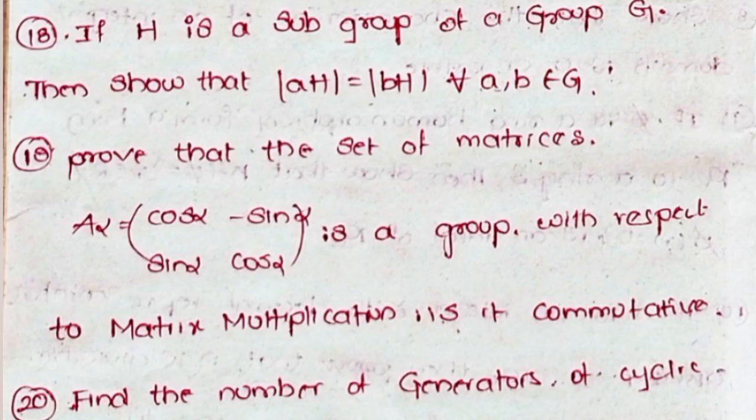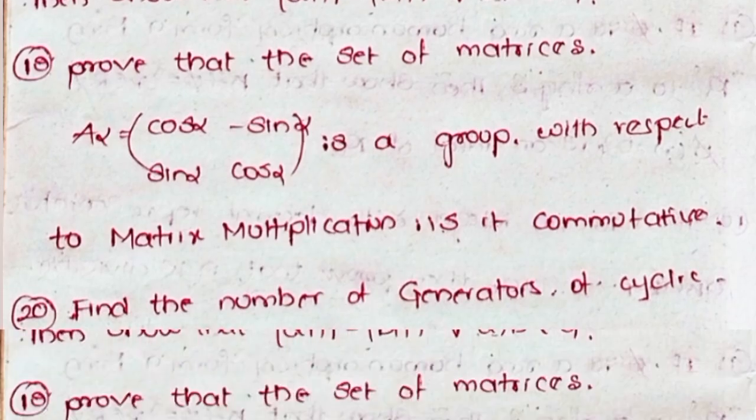Eighteenth, if H is a subgroup of a group G, then show that |aH| = |bH| for all a, b belonging to G. Nineteenth, prove that the set of matrices A(alpha) = [cos α, -sin α; sin α, cos α] is a group with respect to matrix multiplication. Is it commutative?